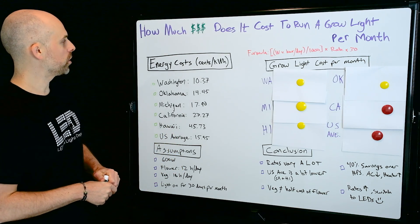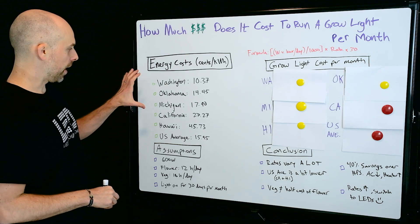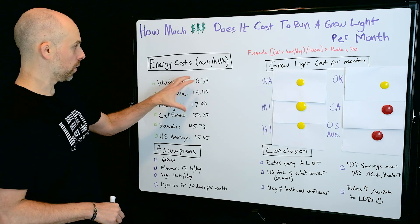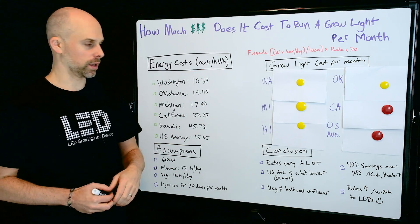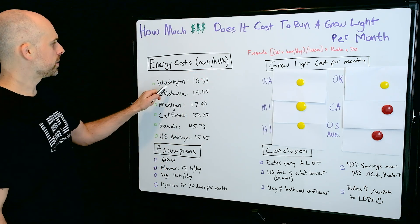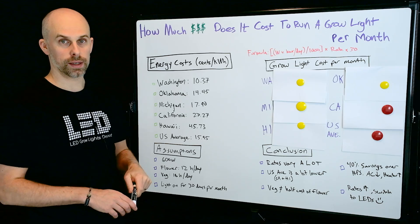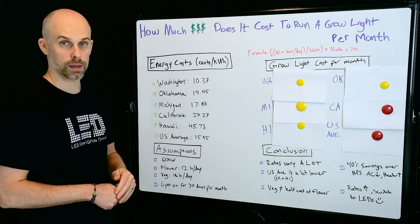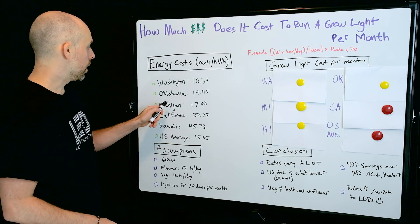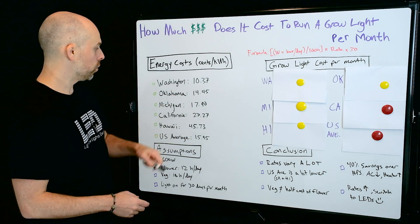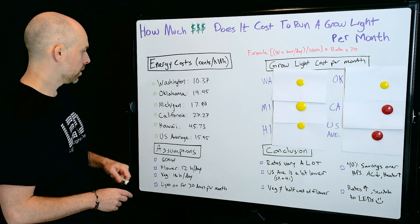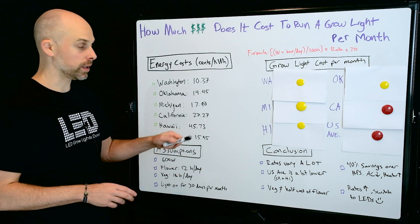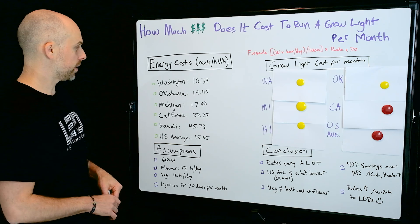So to answer this question, I took five different states and ranked them from an energy cost from lowest to highest in cents per kilowatt. I started with Washington because it is lower than average and one of the lowest or cheapest states in terms of energy, followed by Oklahoma, Michigan, California which is at the higher end, Hawaii which is at the really high end, and the U.S. average.